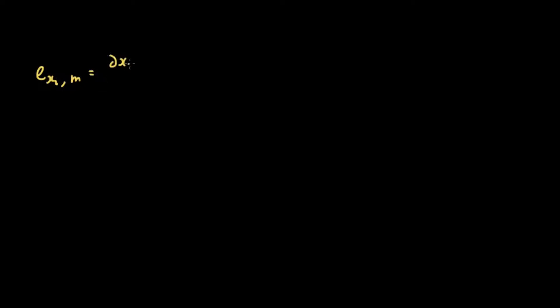In the last video, we talked about normal goods, inferior goods, and the two types of normal goods which are necessities and luxuries. We also talked about elasticities, particularly the income elasticity of demand which we denoted as e sub x sub i comma m, which was equal to the partial derivative of x sub i star with respect to m, multiplied by m over x sub i star.